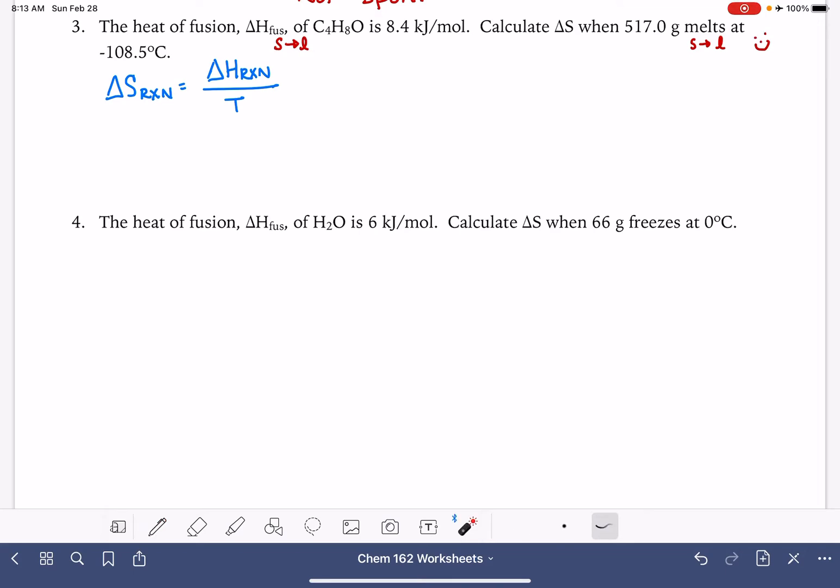The second thing that we have to look out for is the delta H value that's given to us is going to be for one mole of this particular substance. Our delta H that's provided to us is 8.4 kilojoules per one mole of the C4H8O. We are being told that we have 517 grams, which may or may not be one mole. So what we need to do is figure out how many moles we have to see if we need to make an adjustment to that delta H value.